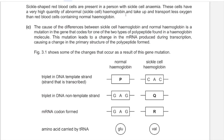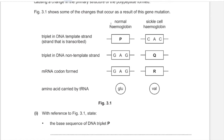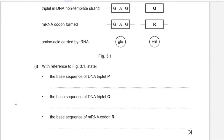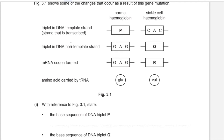This mutation leads to a change in the mRNA produced during transcription, causing a change in the primary structure of the polypeptide formed. The nucleotide coding for amino acids is changed, resulting in a change in amino acid sequence. Figure 3.1 shows some of these changes. The DNA triplet at P on the template strand is CTC (with the non-template strand reading GAC), and at Q the non-template strand reads GTG. The mRNA codon transcribed from the template strand would be GUG.